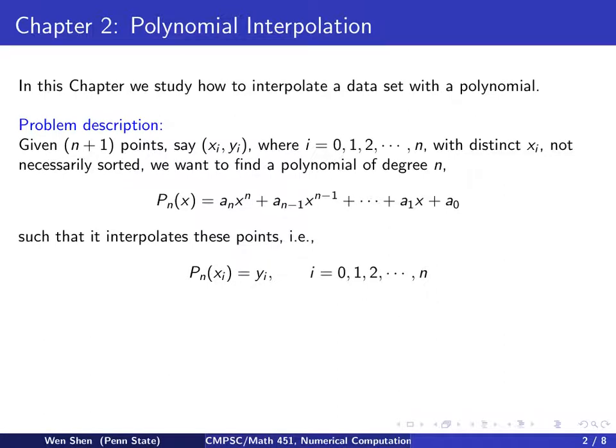Here is the problem description. Given a data set with n plus 1 points, say we denote them by (xi, yi) as a point, where i is an index running from 0, 1, 2, all the way to n. Here, we require the x's to be distinct, and you don't have to sort it. That's not necessary.